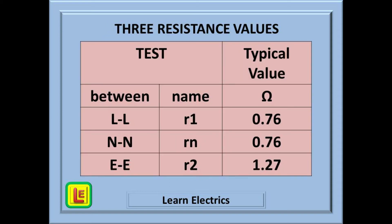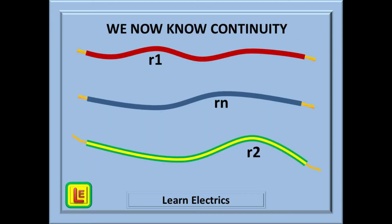We now have our three resistance values: line-to-line or little r1, neutral-to-neutral or little rn, and earth-to-earth or little r2. We now know that each of the conductors is continuous from one end to the other, including where the conductors are joined at each of the sockets, and that they are actually connected together.